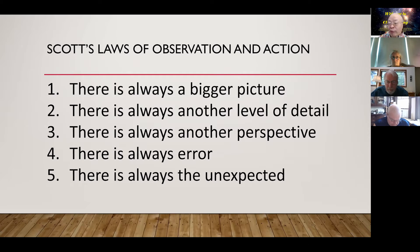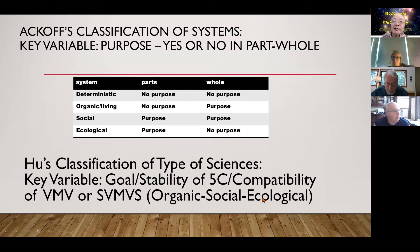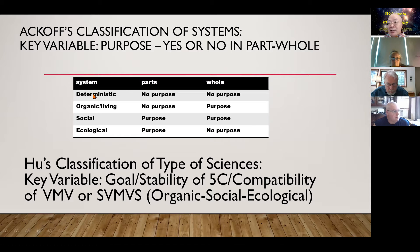So I'm excited for Jamie's proposal of how do we move forward. Here is Scott's five laws for observation and action, and a second appetizer coming from a course classification of systems. He basically uses the key variable of purpose — yes purpose or no purpose — in the part and the whole.